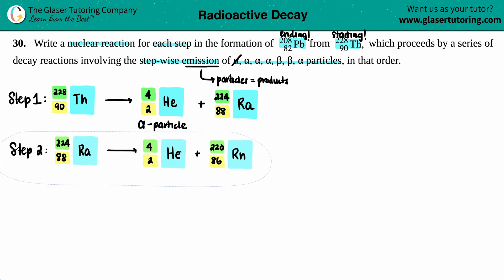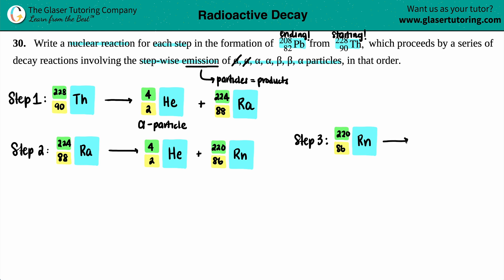Two steps down. Next is another alpha, so step three. Pick up where you last left off. We have the radon, Rn-220, 86. It's another alpha particle, so another helium-4 and 2.